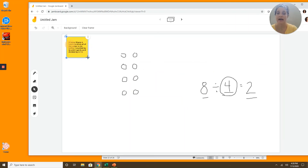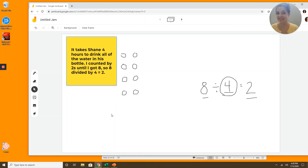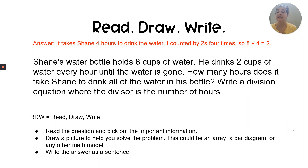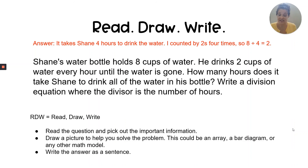I've read, I've drawn, and now I've written a nice juicy answer to my question in complete sentences. Let's check our answer. It takes Shane four hours to drink the water. I counted by twos four times, so eight divided by four equals two. The wording doesn't have to be exactly the same — everyone's sentences will be different. Do your very best: if you can write one really good sentence, that's fine. If you can write two, three, or even four sentences that make sense and support your answer, that's awesome.